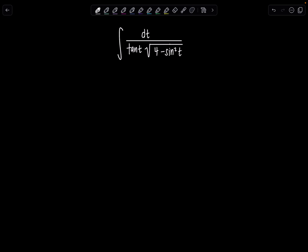We have an indefinite integral of 1 over tan t times the square root of 4 minus sine squared t, dt. So if you want to try it on your own, go ahead, pause the video. You're going to need to do u sub and then another integration technique.